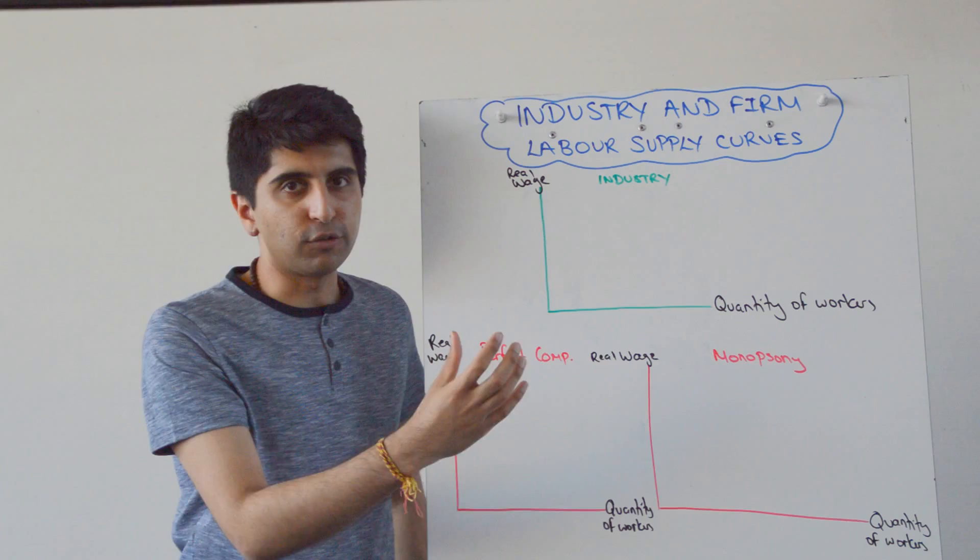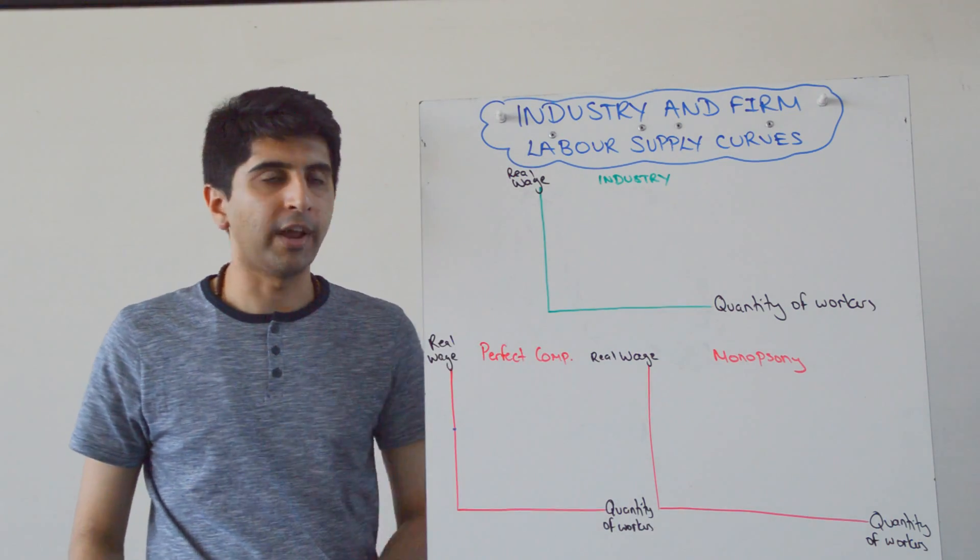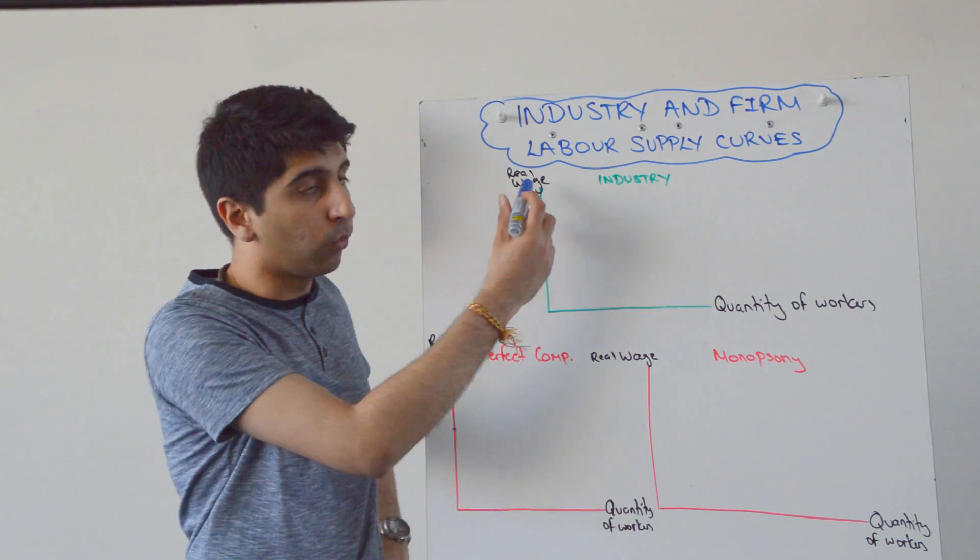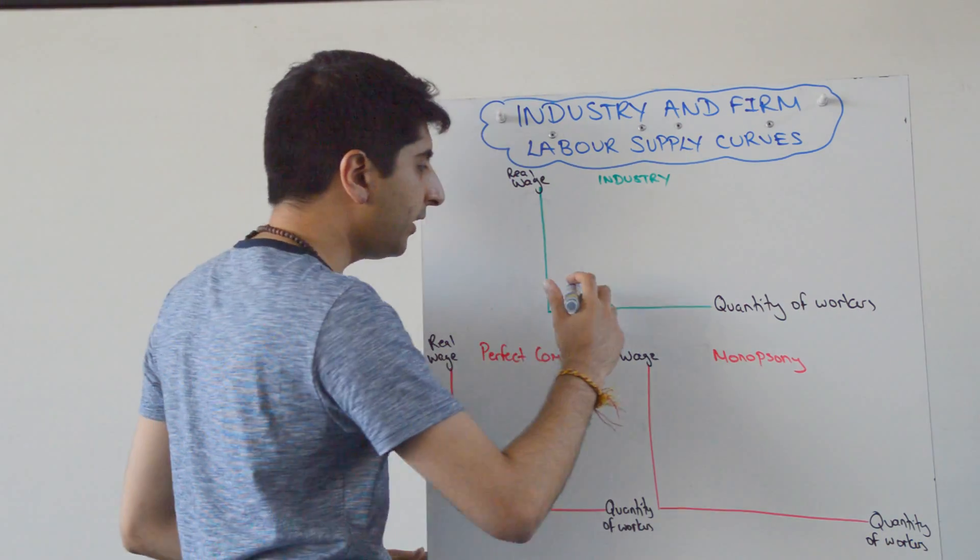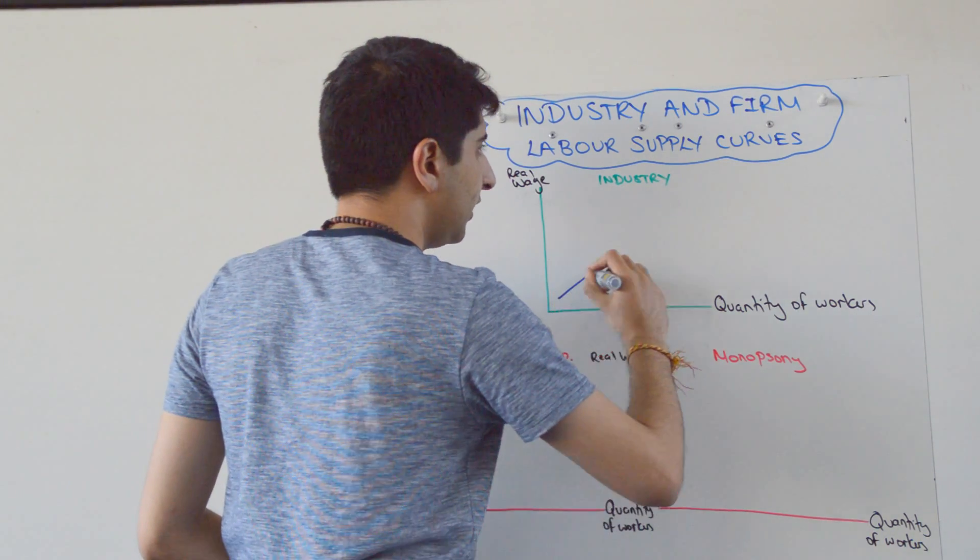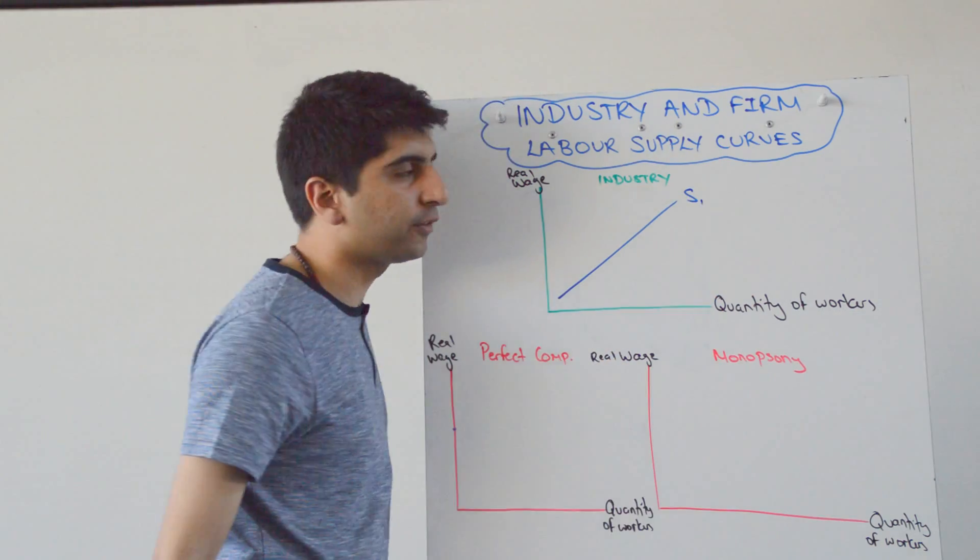Let's look at the industry. So let's say this is the market for nurses right now. We have on the y-axis the wage or the real wage, on the x-axis the quantity of workers. The supply curve for a given profession in an industry is upward sloping like that.